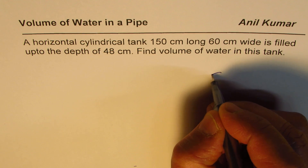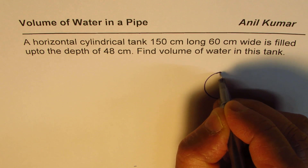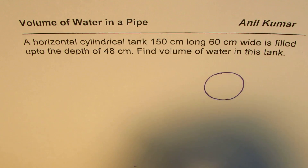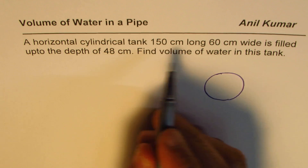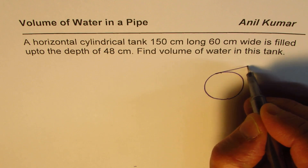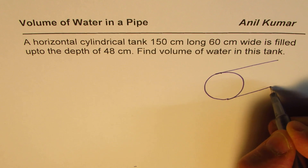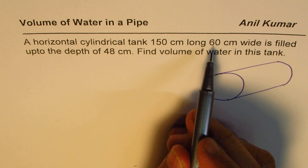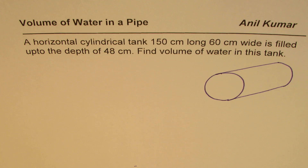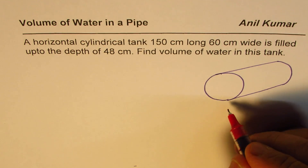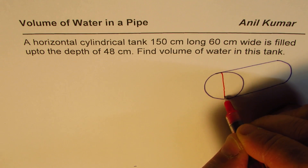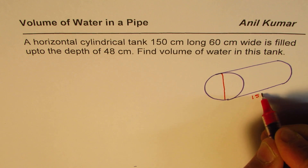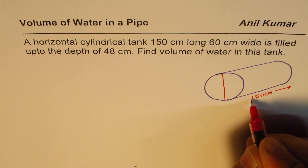Let me sketch this. You can pause the video, answer the question, and then look into my suggestions. So this is our cylindrical tank placed horizontally. It is 150 cm long — that is the length — and this is the width.